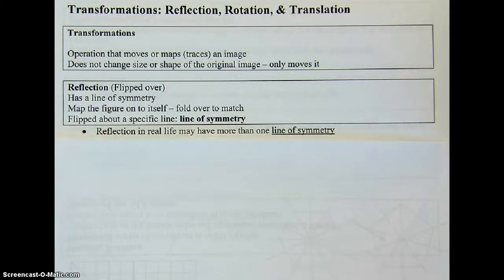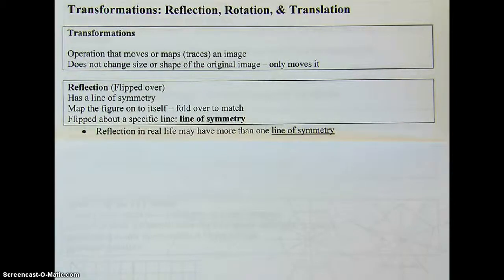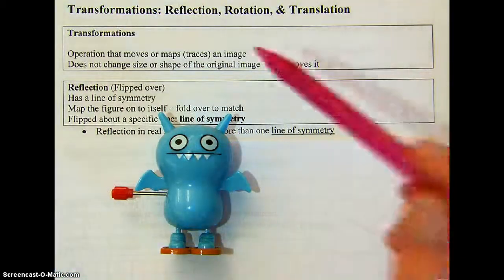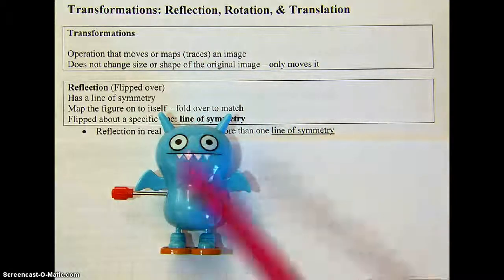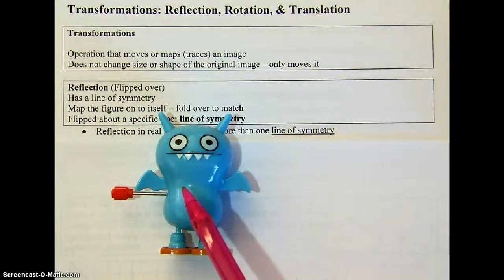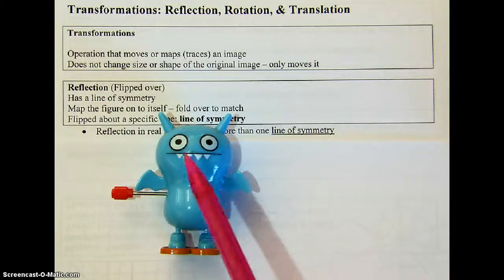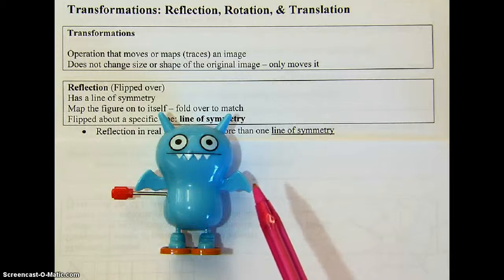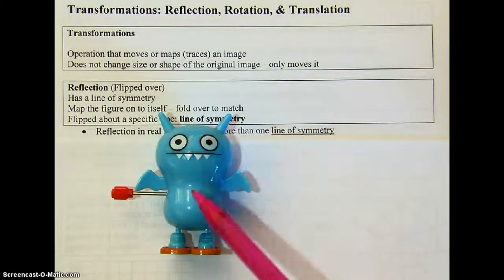The first transformation is a reflection, which you can also think of as being flipped. It has a line of symmetry that maps the figure back onto itself. So if you fold it over that line, it would match up exactly on the other side — that specific line is called the line of symmetry. For example, a little figure has a line of symmetry down its center, where each wing tip is the same distance from the center line.